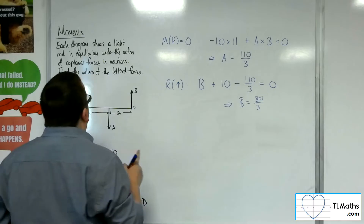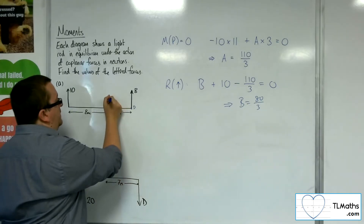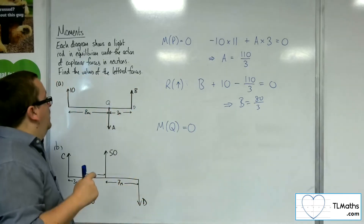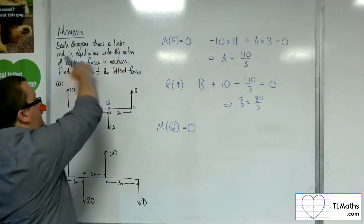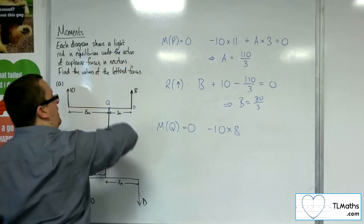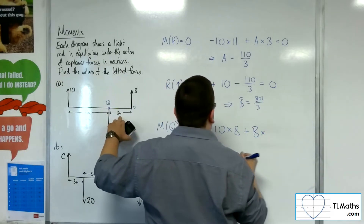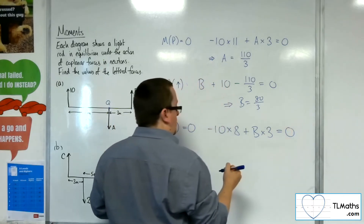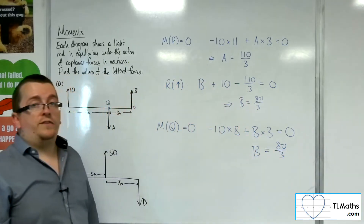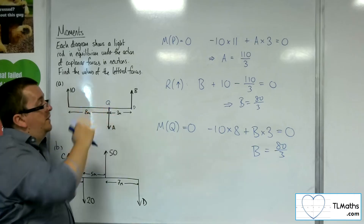To confirm this, if I take moments about another point Q instead: the 10-newton force is clockwise, so minus 10 times 8. B is anticlockwise, so plus B times 3, and that equals zero. So B equals 10 times 8 divided by 3, which is 80 over 3 — the same answer. You could also take moments about a third point R and get the same value again.